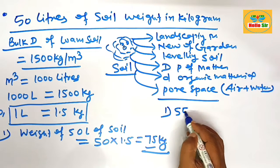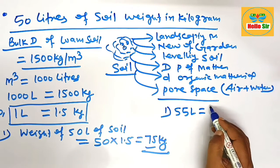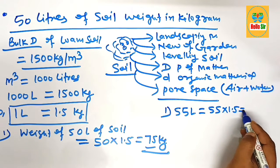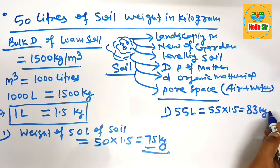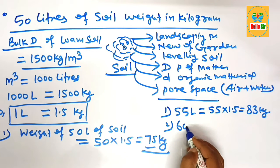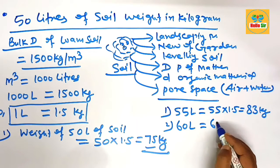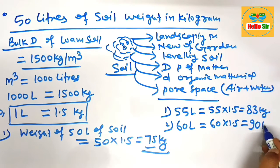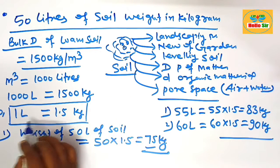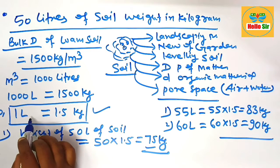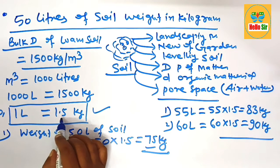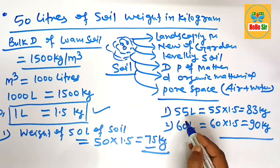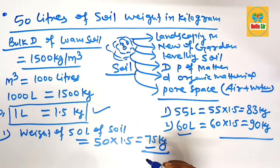For example, what is the weight of 55 liters of soil? You just multiply 55 by 1.5, which comes to about 83 kilogram. And what is the weight of 60 liters of soil? 60 multiplied by 1.5 comes to approximately 90 kilogram. Remember this conversion factor: one liter of soil weighs about 1.5 kilogram, so you can find the weight of any volume of soil in kilogram.